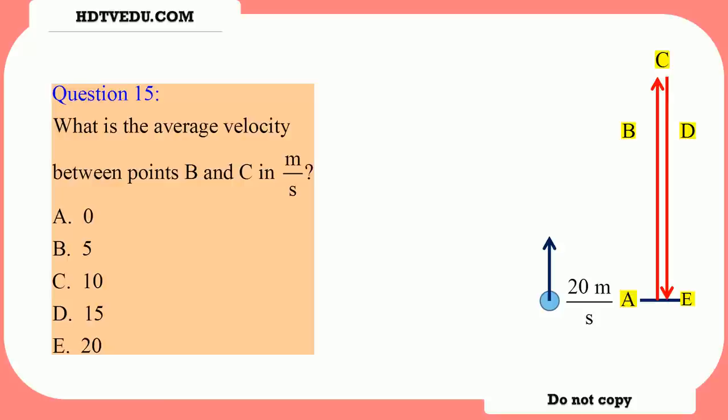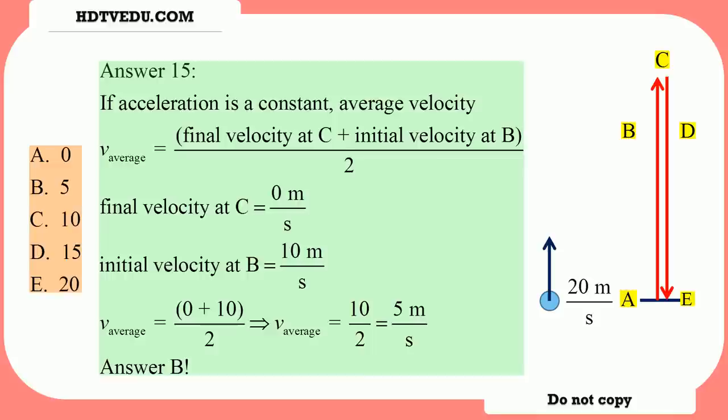What is the average velocity between B and C? 0 plus 10 divided by 2 is 5. Answer is B. If acceleration is constant, average velocity is given by final velocity at C plus initial velocity at B divided by 2. Final velocity at C is 0, initial velocity at B is 10 meters per second. So average velocity is 0 plus 10 divided by 2, which is 5 meters per second.